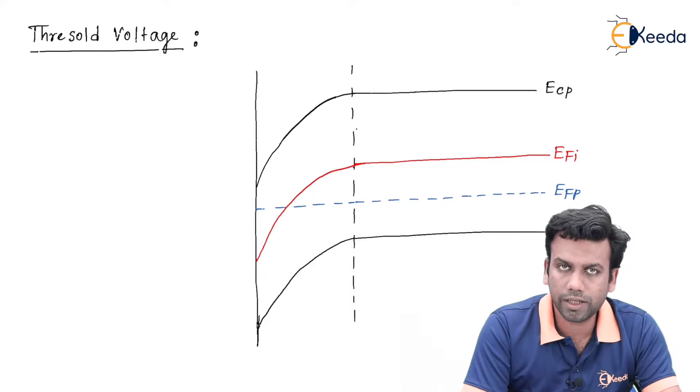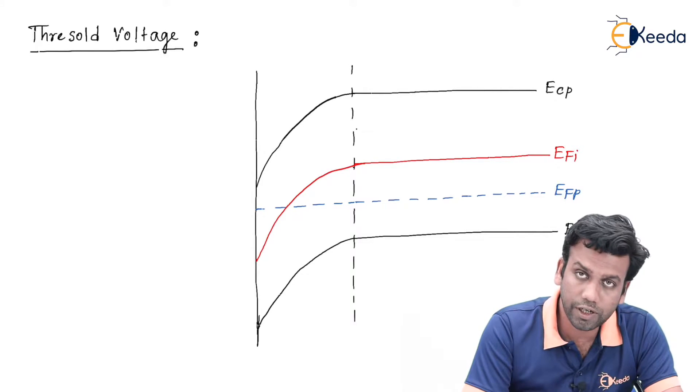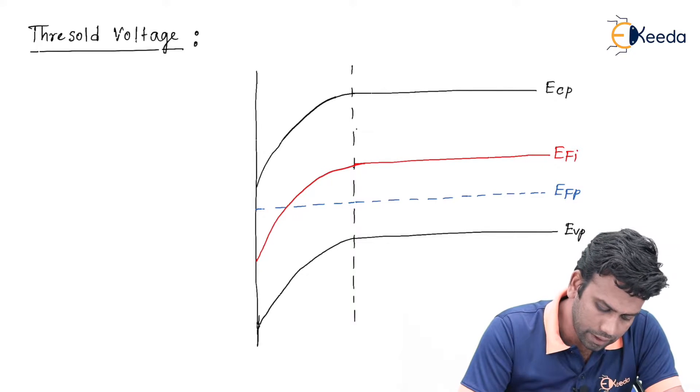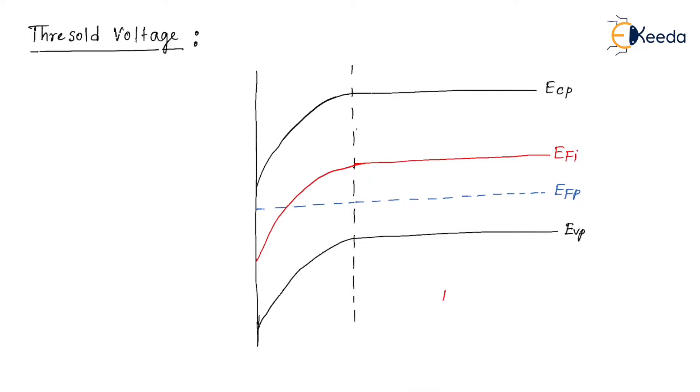To discuss the threshold voltage we need to draw a band diagram in the inversion condition. This is the band diagram of a P-type MOS capacitor where this is the maximum depletion layer or xdt and here it is SiO2.